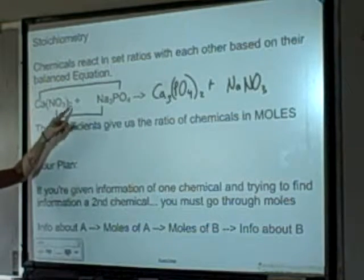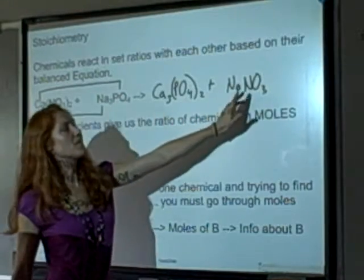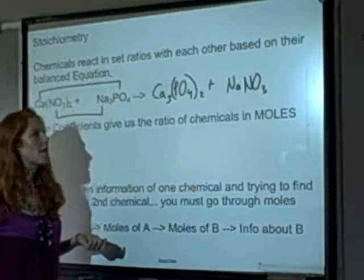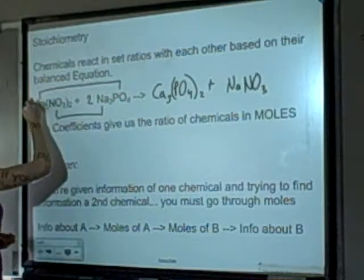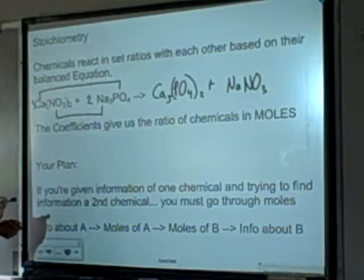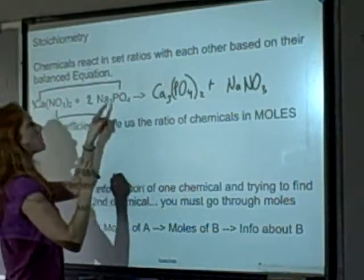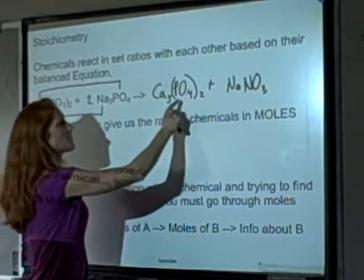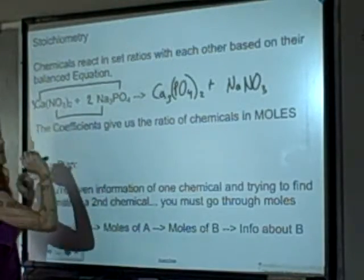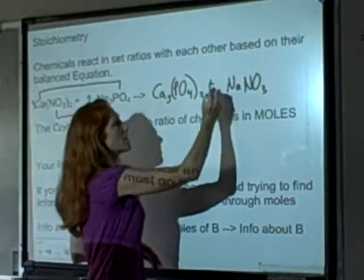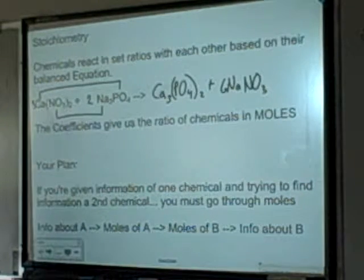I can see I have 2 nitrates and 3 sodiums, so I need an equal amount — I'll end up with 6 of each. With 2 sodium phosphates and 3 calcium nitrates, I have 3 calciums and 3 calciums, 2 phosphates and 2 phosphates, 6 sodiums and 6 nitrates. So it's balanced.